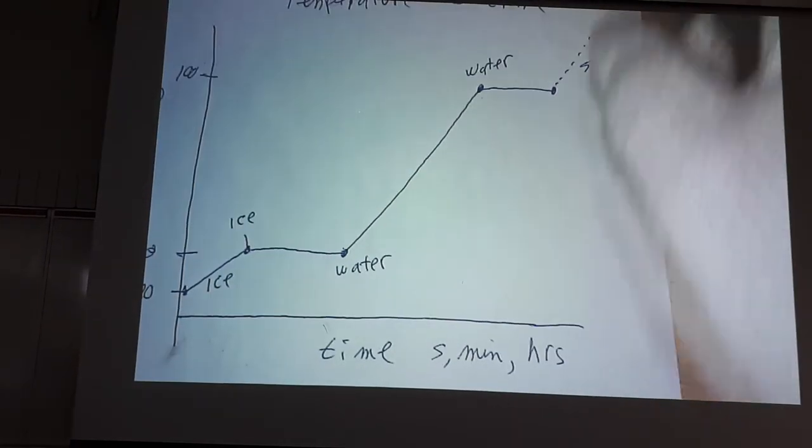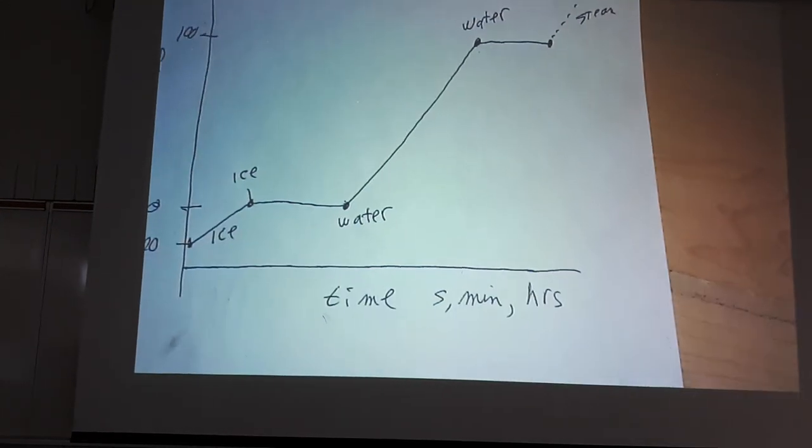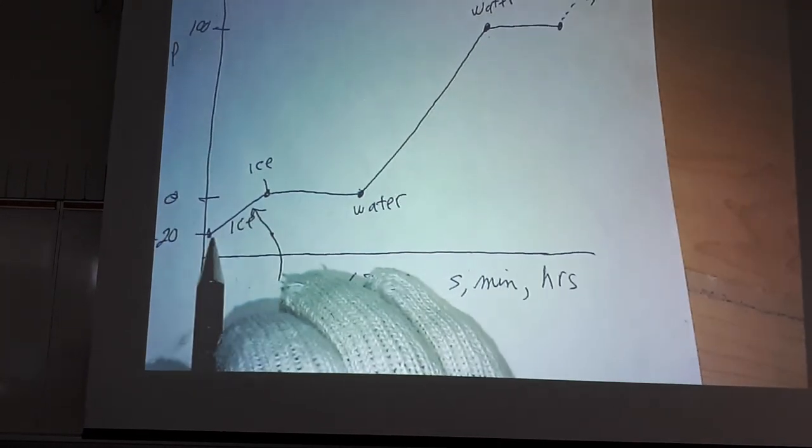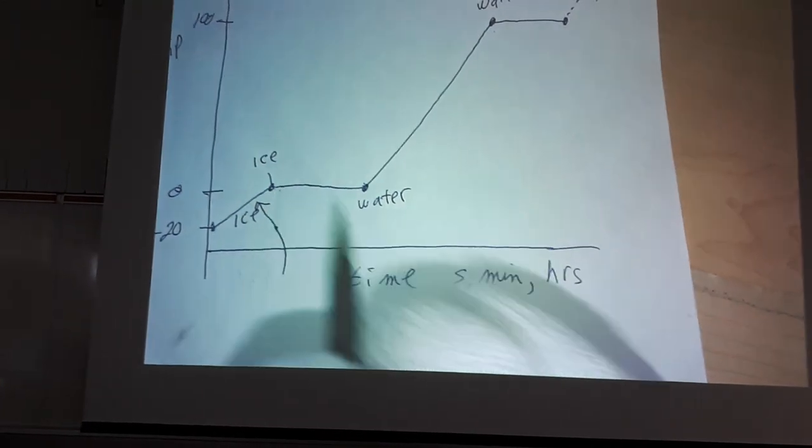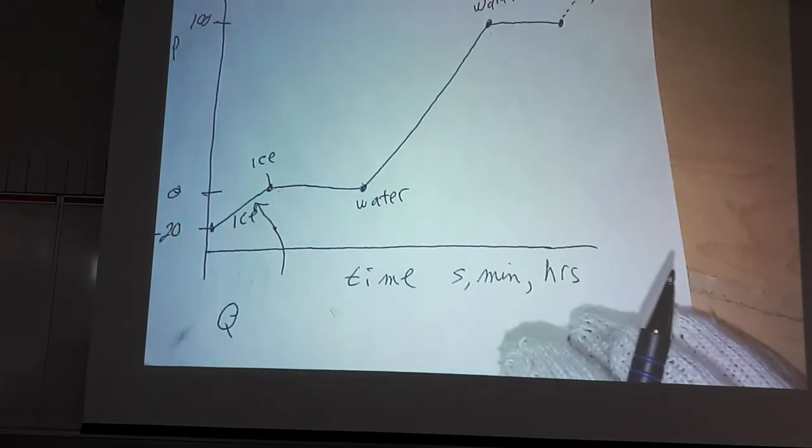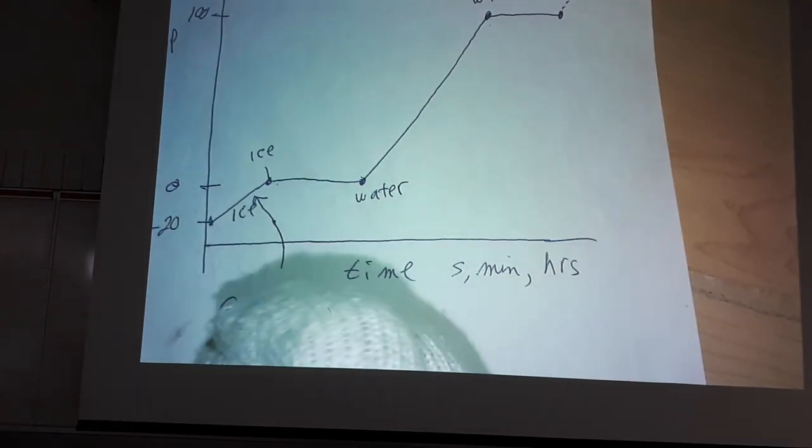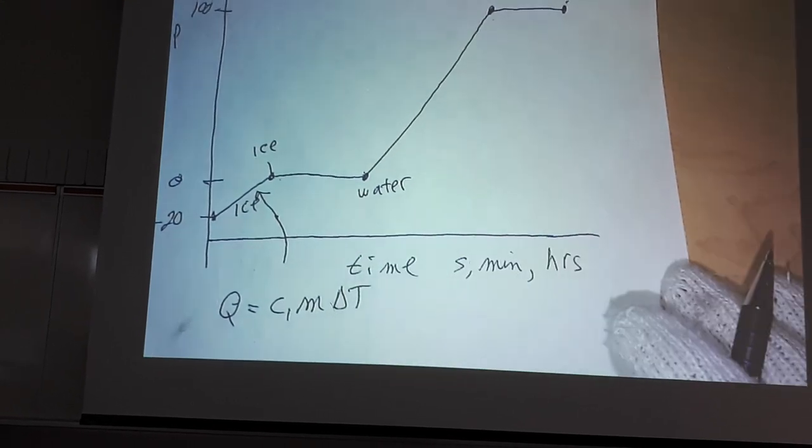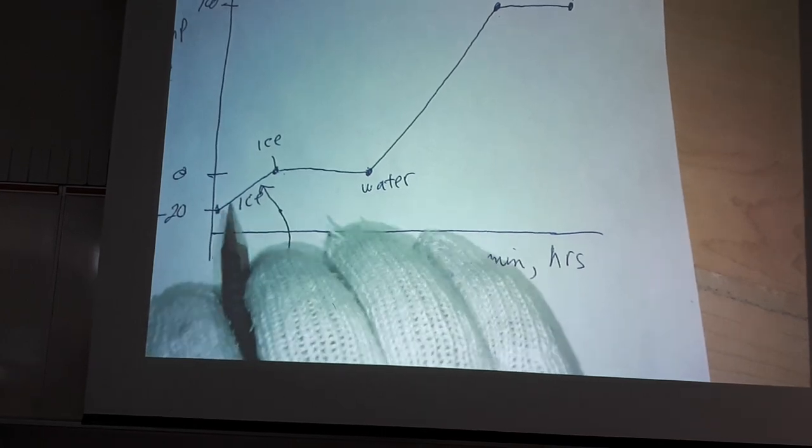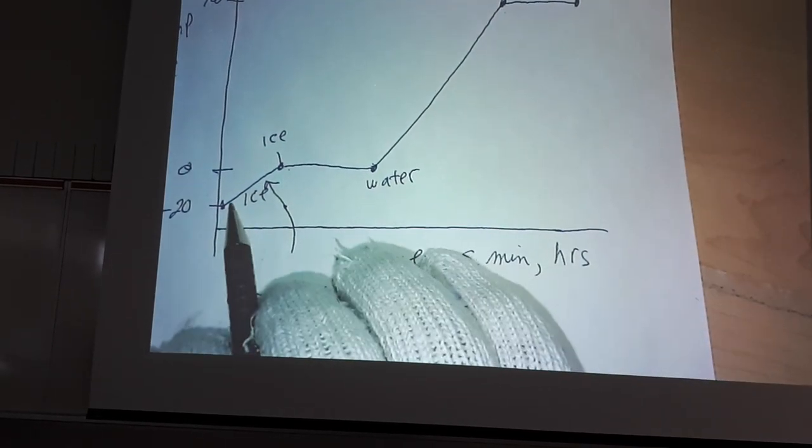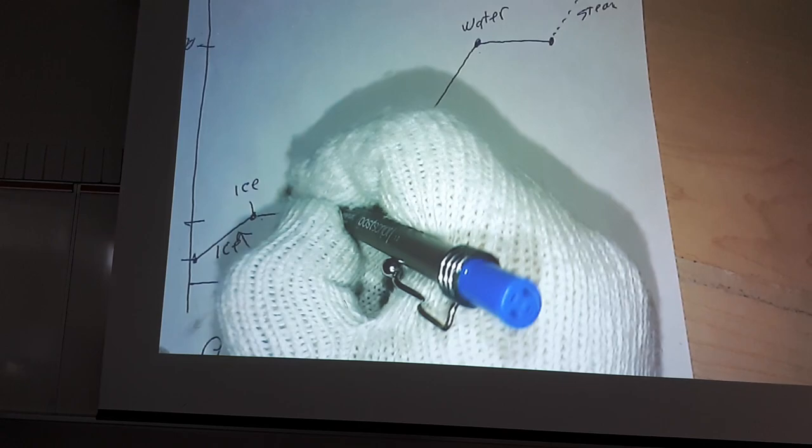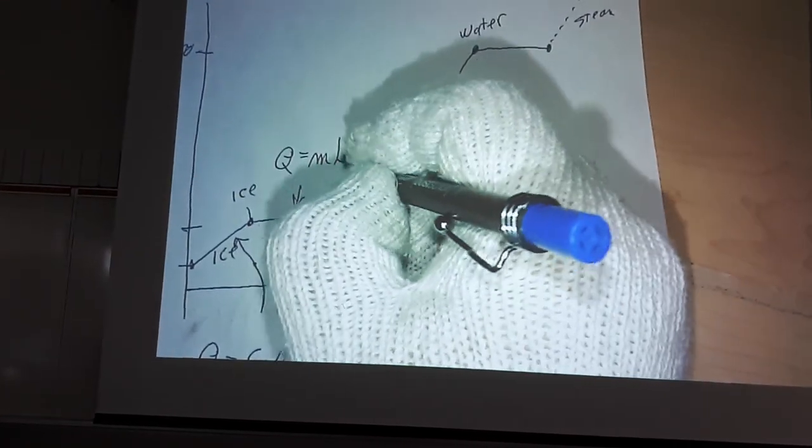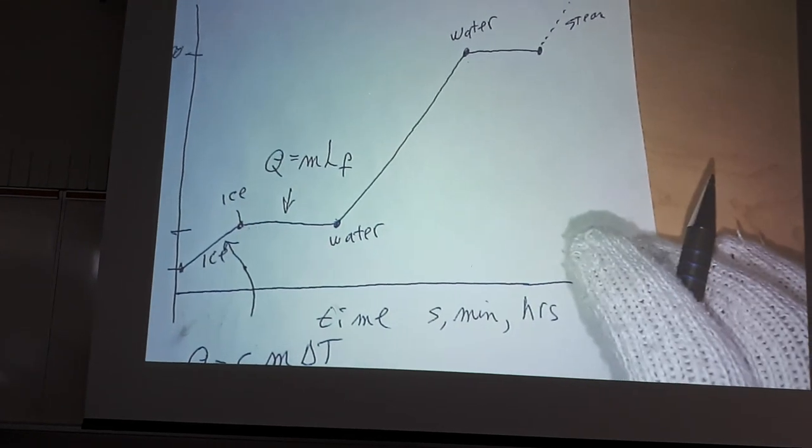There are some equations that can be applied to these various lines. Right here for that line, for ice coming from minus 20 up to the zero mark, the equation is Q equals C1 times mass times the change of temperature. That represents that slope or just this curve. Down here, this plateau, Q again is heat. It's equal to mass times latent heat of fusion.